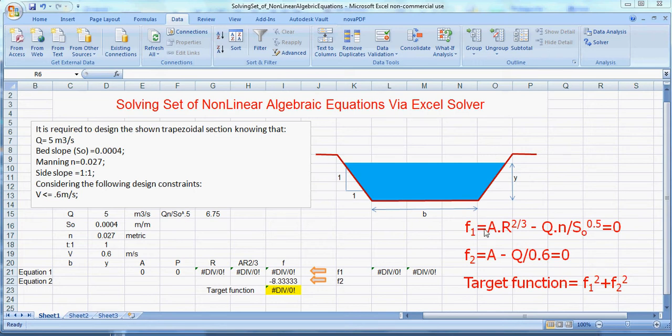The first equation comes from the Manning equation, which is represented by F1. The second equation comes from the velocity constraint, which is represented by F2. And we developed a target function called F1 squared plus F2 squared.